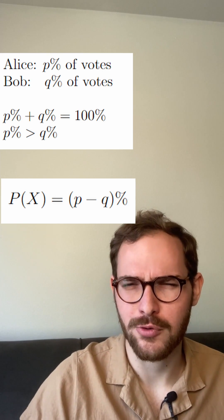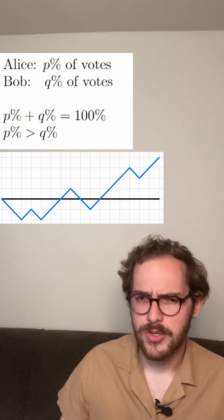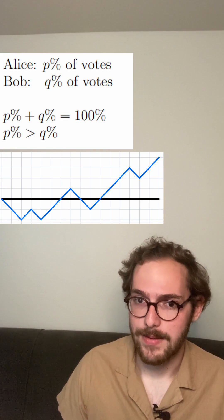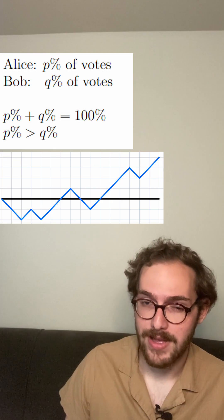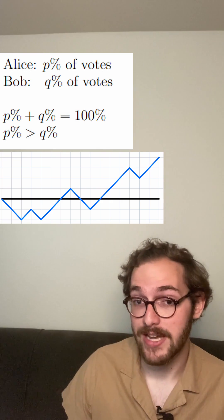On top of this, it has an incredibly clever proof. Start counting the votes one at a time. If it's for Alice, take a step up, and if it's for Bob, take a step down.